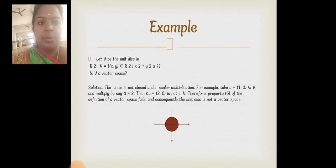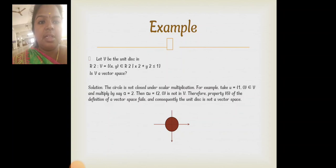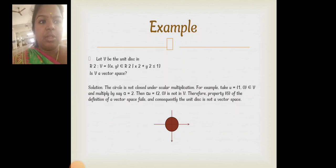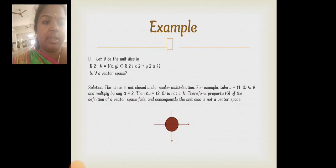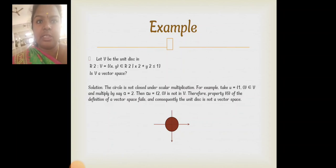For example, take U = (1, 0), which belongs to V, and multiply by alpha = 2. Then alpha·U = (2, 0), which is not in V. So property 6 of the definition fails. Therefore, the unit disk — as shown in the diagram — is not a vector space.